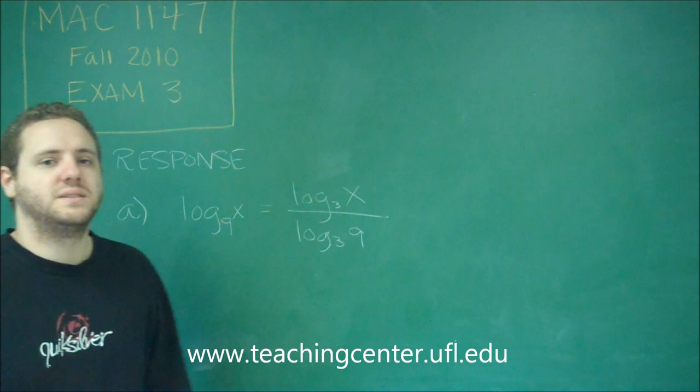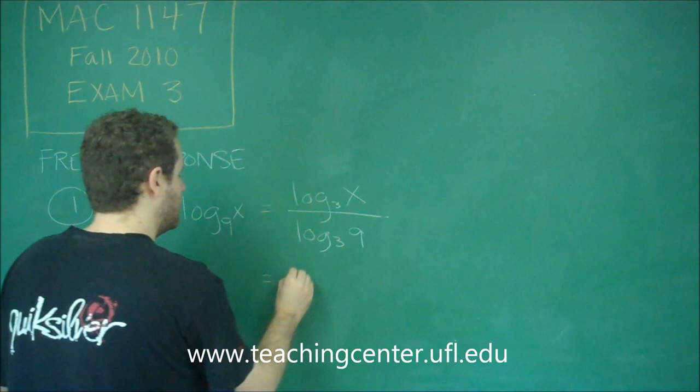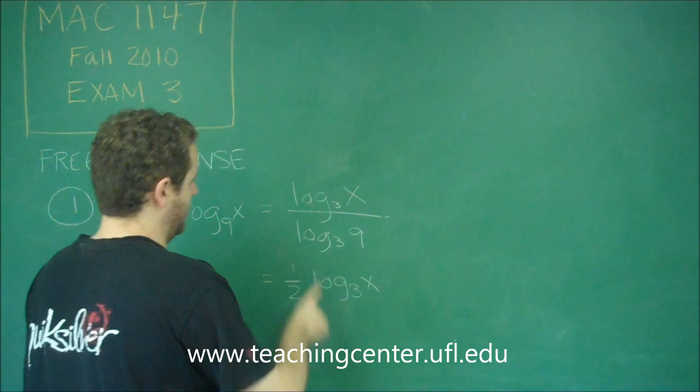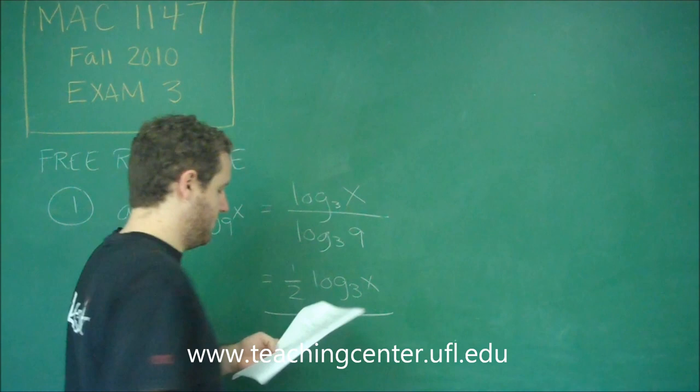Now all you have to do is solve what is log base 3 of 9. Remember that something like this is saying 3 to what power is equal to 9? This is equal to 2, so we have 1 half log base 3 of x, because we have log base 3 of x divided by 2. This is our answer for letter A.